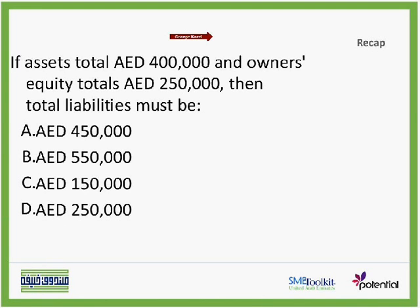If assets total is $400,000 and owner's equity total is $250,000, then total liability must be — this is an easy question. Remember, assets minus liabilities equals equity, or assets equals liabilities plus owner's equity. So the difference between assets and equity equals liability: $400,000 minus $250,000, which is $150,000.